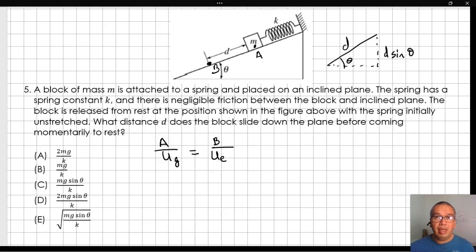This setup implies that our zero height is at point B. If we substitute by the formula for each type of energy, we get m g d sine of theta is equal to one half k d squared. We can cancel one d, and solving for the remaining d results in two m g sine of theta divided by k, which corresponds to option D.